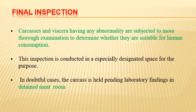Final inspection: carcasses and viscera with any abnormality are subjected to more thorough examination to determine whether they are suitable for human consumption. Sometimes we need thorough inspection and laboratory tests to confirm. This inspection is conducted in a specially designated space. In doubtful cases, the carcass is held pending laboratory findings in the detained meat room. Samples are sent for specific laboratory tests which may take time, and until then such carcasses are held in the detained meat room.